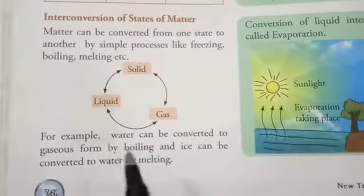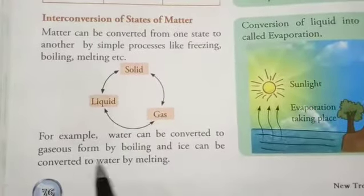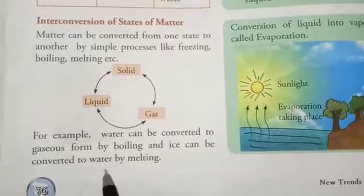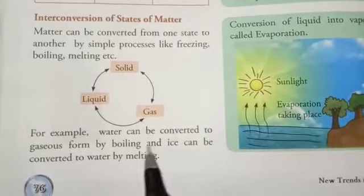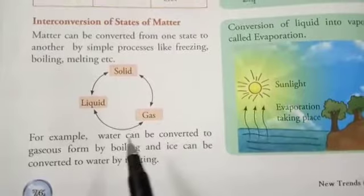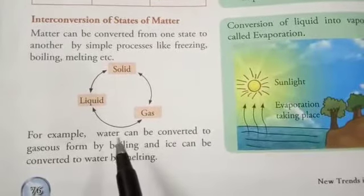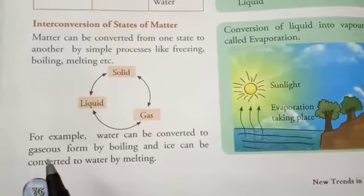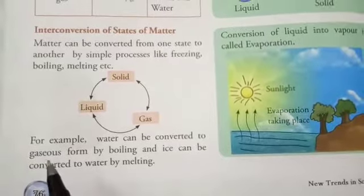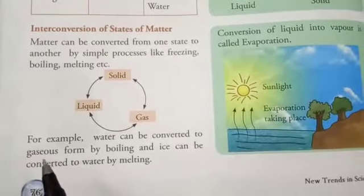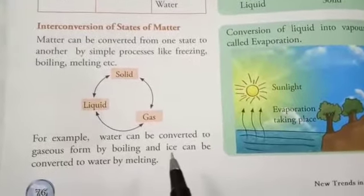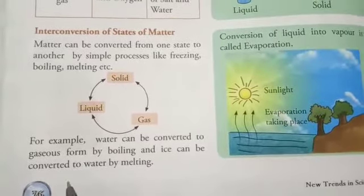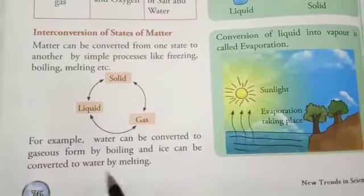For example, water can be converted to gaseous form by boiling, and ice can be converted to water by melting. If we boil water, it will change into gaseous form — it will become steam. Vapours are the gaseous form. If we melt the ice, it will become water.